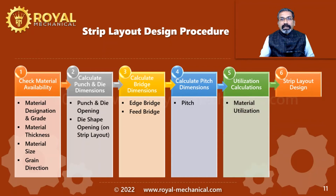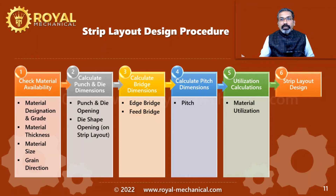Step five: we are going to calculate the material utilization. Material utilization is the amount of raw material used to make the actual components — the remaining material is scrapped. The objective is to minimize the scrap.